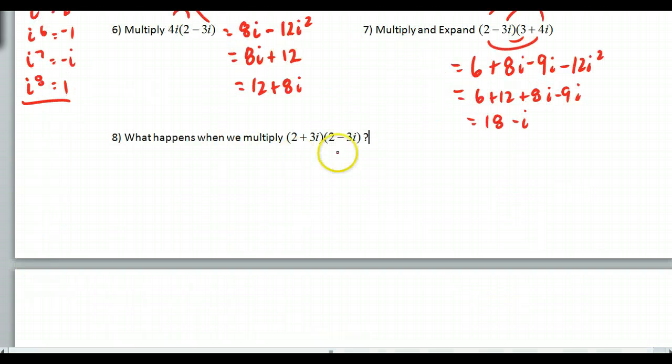My last example, maybe we're going to pause this and try to do this. But what happens when we take 2 plus 3i and multiply it by 2 minus 3i? Well, if I do this, I get 4. I'm doing FOIL.